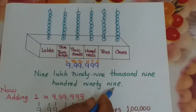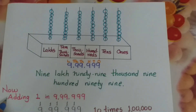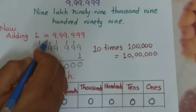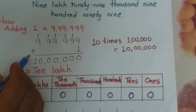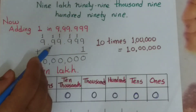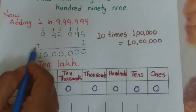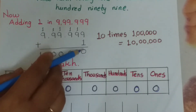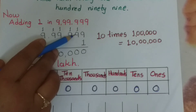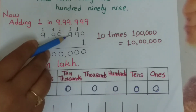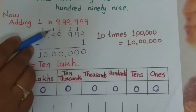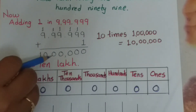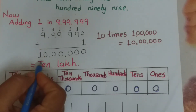Now adding 1 to 9 lakh 99,999. See here — addition: 9,99,999 plus 1. 9 plus 1 is 10, 0 comes here, carry 1. 1 plus 9 is 10, 0 here, carry 1. 1 plus 9 gives 0, carry 1. Again 1 plus 9 is 10, 0 here, carry 1. Again 1 plus 9 is 10, 0 here, carry 1. Again 1 plus 9 is 10. So we get the number 10 lakh.